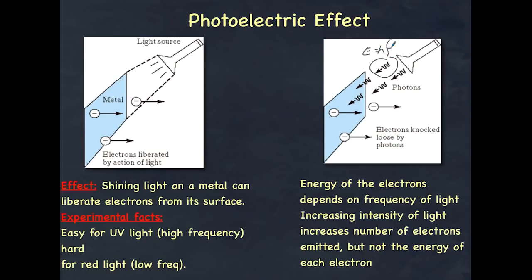In other words, a higher frequency — for example, UV — means the electron will be released from the surface and have some kinetic energy. If the frequency is lower, any leftover energy will be less and the electron's energy will be lower as well. And if the electron is bound to the metal to such a degree that this energy isn't enough for it to be released, then no electron is released at all.